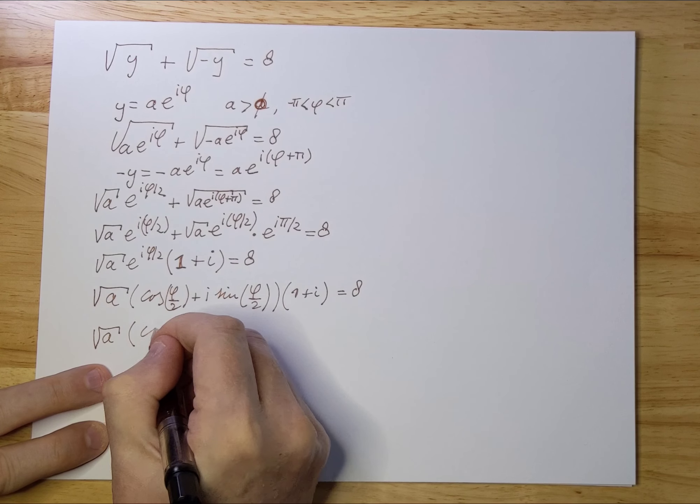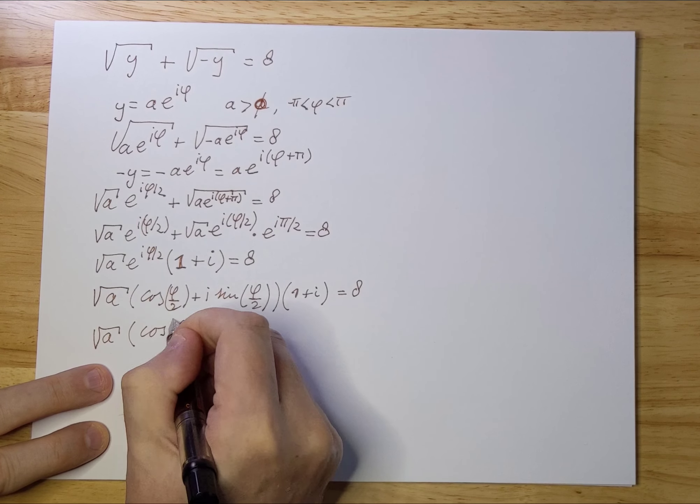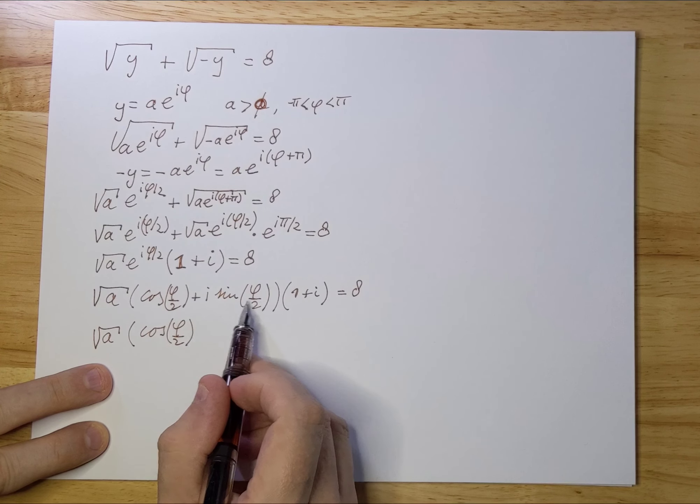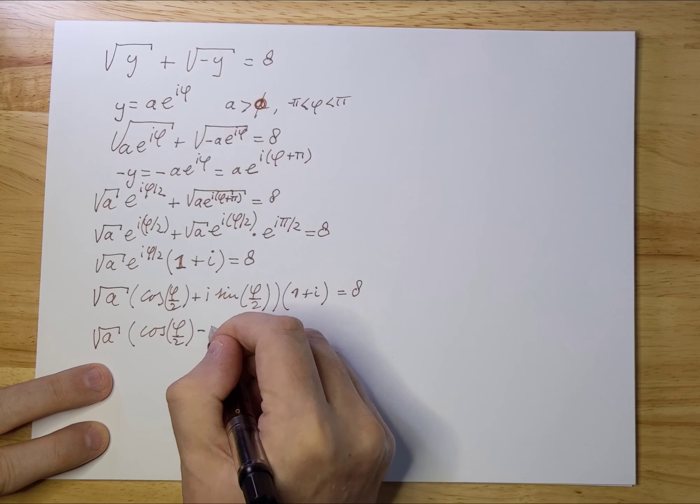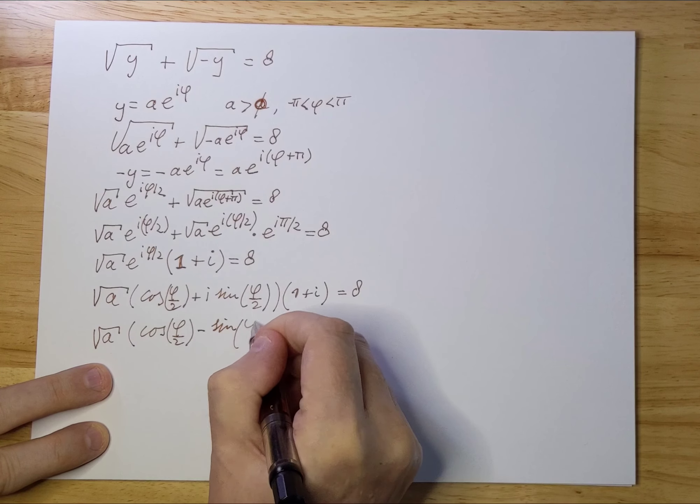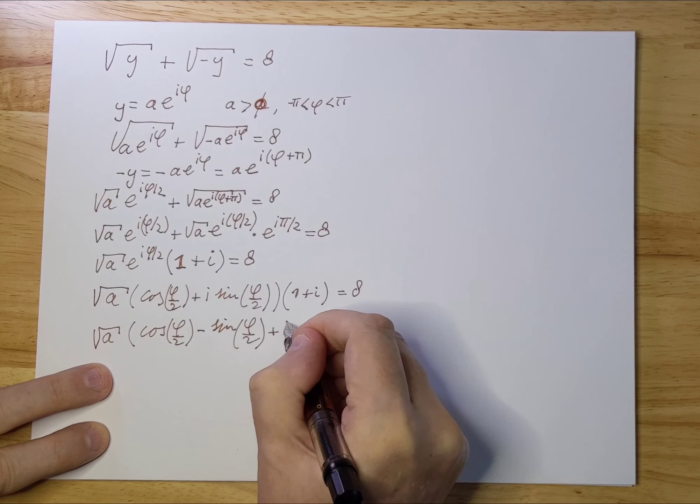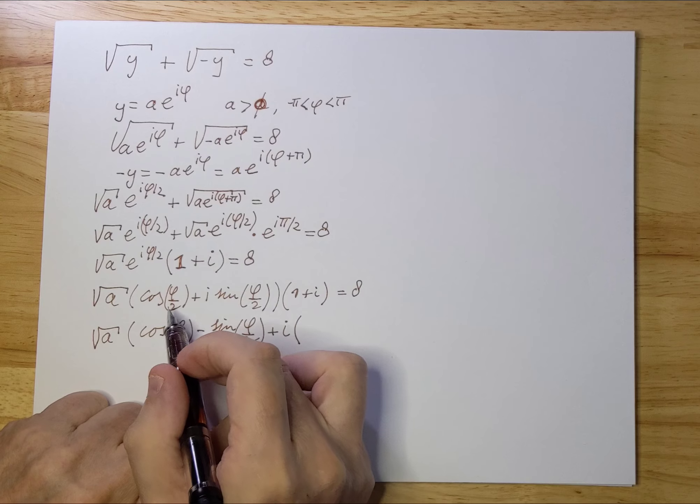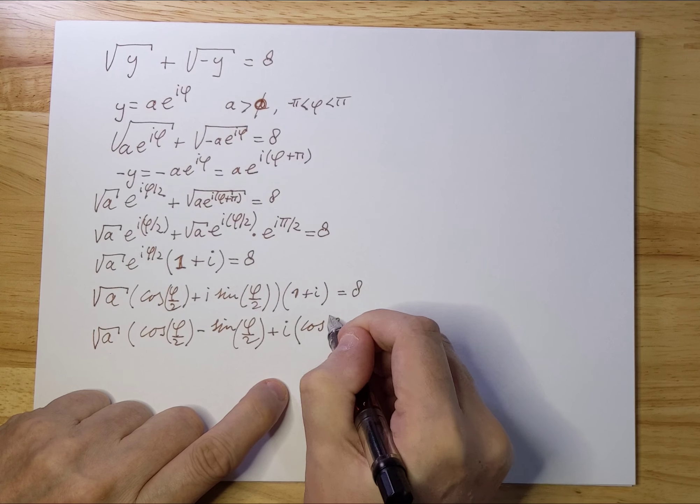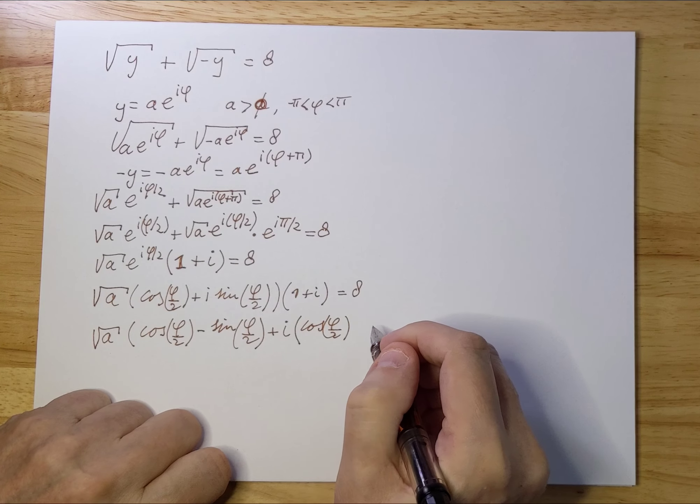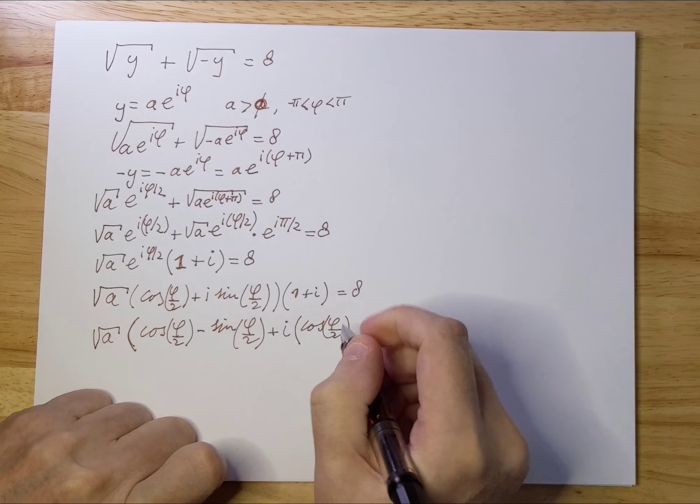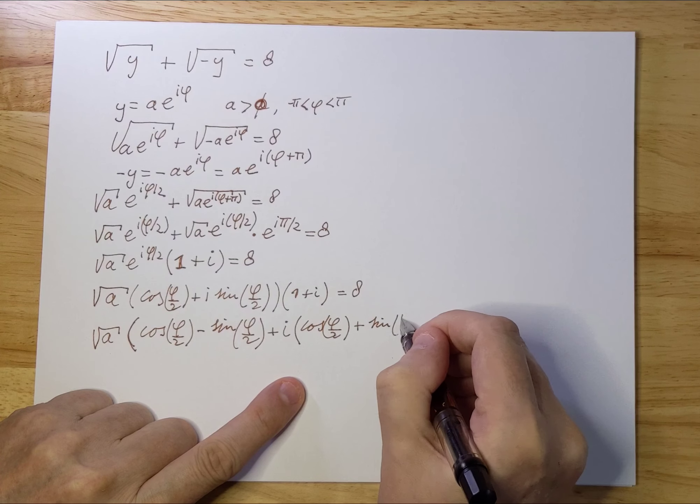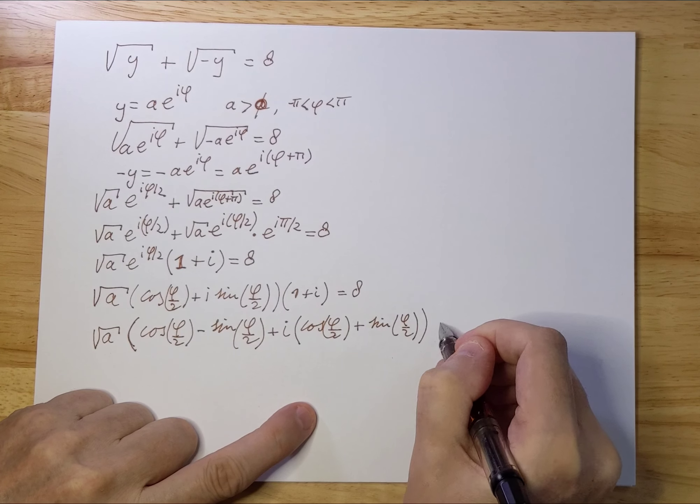Working this out more: √a times (cos(φ/2) + i·sin(φ/2)·i, which is -sin(φ/2)), collecting the real and imaginary parts, plus i times (cos(φ/2) + sin(φ/2)), equals 8.